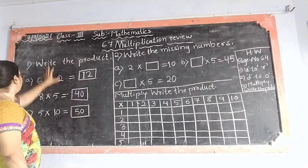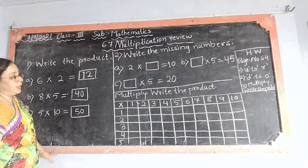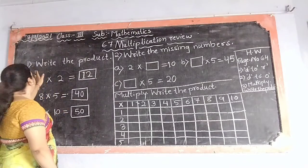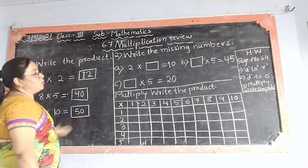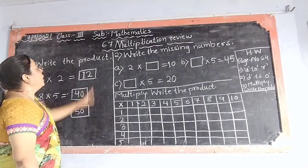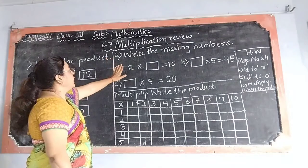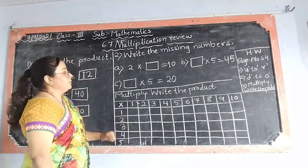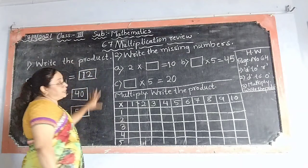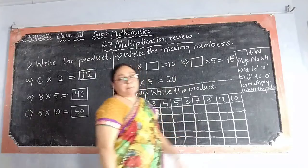5 multiplied by 10 equals 50. I hope you understood this exercise — how to write the product. For homework, we have already done A, B and C. You have to do D to R. Now, question number 2: write the missing numbers. Here we have to write the missing numbers.